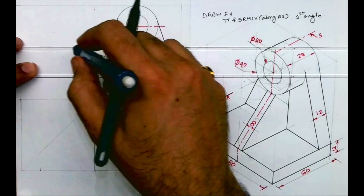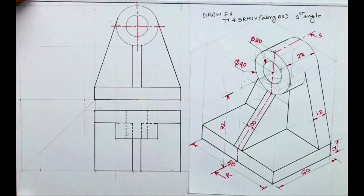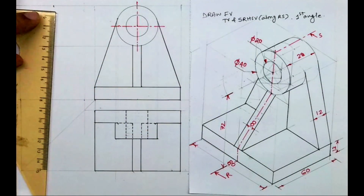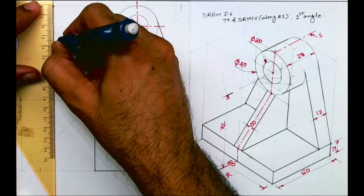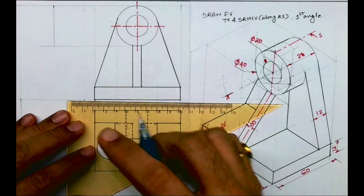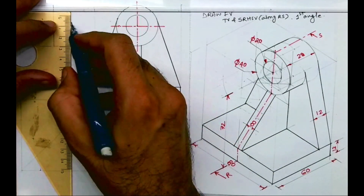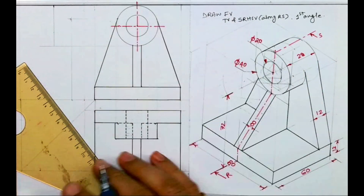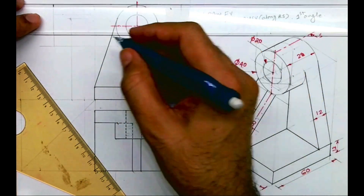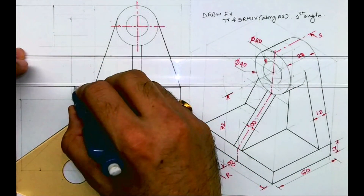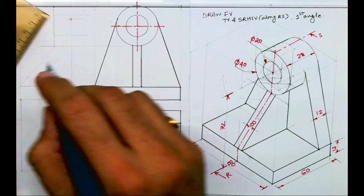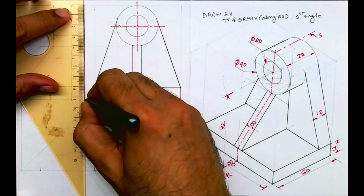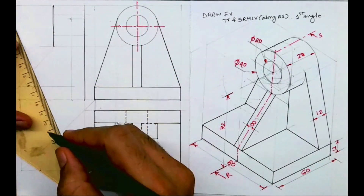Now we need to draw the sectional side view. We will draw light lines — not dotted lines, just light lines. This dimension is 28, then draw a vertical line; from here take 12 and draw a vertical line. See this curve — it is dotted, but I'm drawing a light line. Then join these points — this is how it will appear. For the sectional view, I'll first draw the extreme boundary dark.